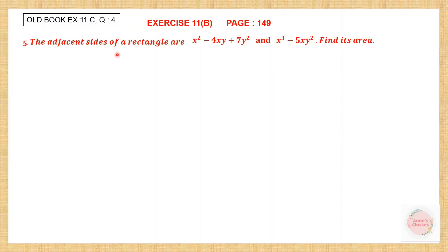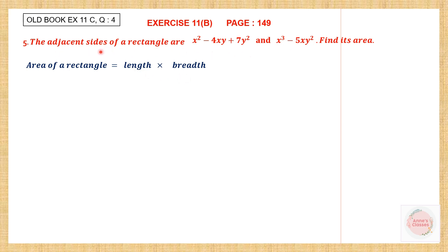The adjacent sides of a rectangle are given to us. These are the two adjacent sides, sides next to each other. Find its area. The formula to find the area is length into breadth. Here length and breadth are not given; you are only told about adjacent sides. Adjacent sides, if you take a rectangle, are the sides that are next to each other. So the length and the breadth are called adjacent sides.